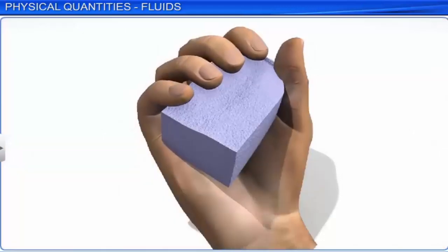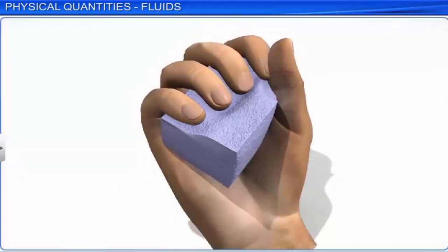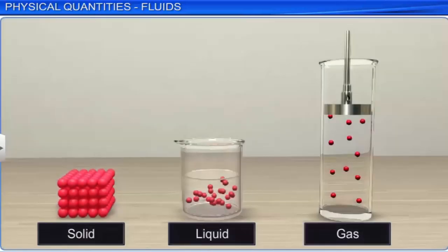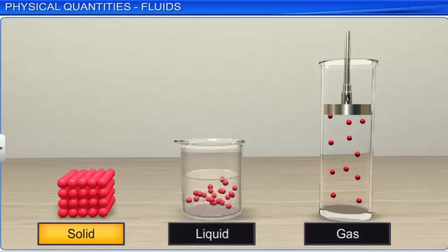When an external force acts on certain categories of bodies, their volume changes and the bodies develop a restoring force. The restoring force acting per unit area is called stress. Change in volume due to stress is negligible in solids, very small in liquids, and very large in a gas.